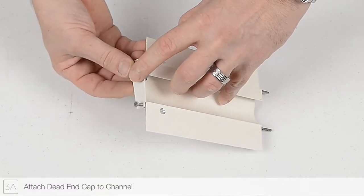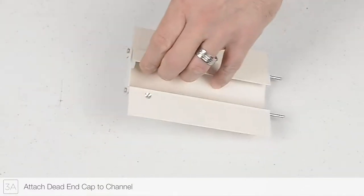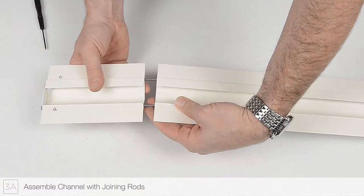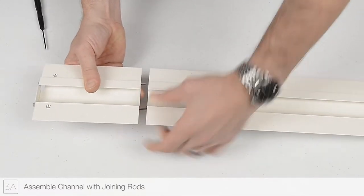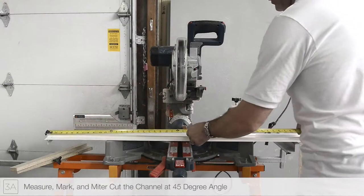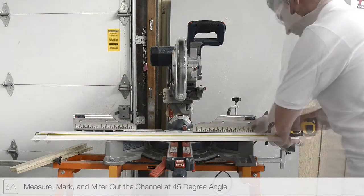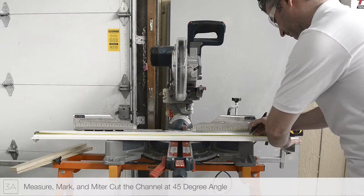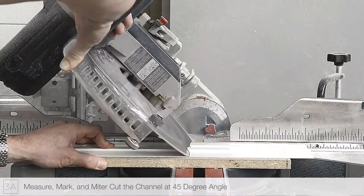Install the dead-end cap to the end of the channel opposite the junction box. Use the joining rods to assemble the other channel. Measure and mark both reveal channels using the measurements from previous steps. Miter cut each of the channels to length.